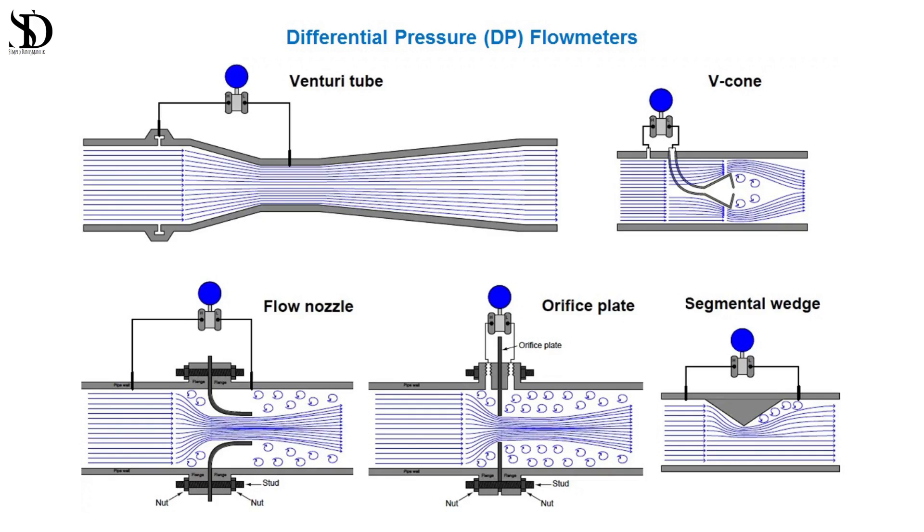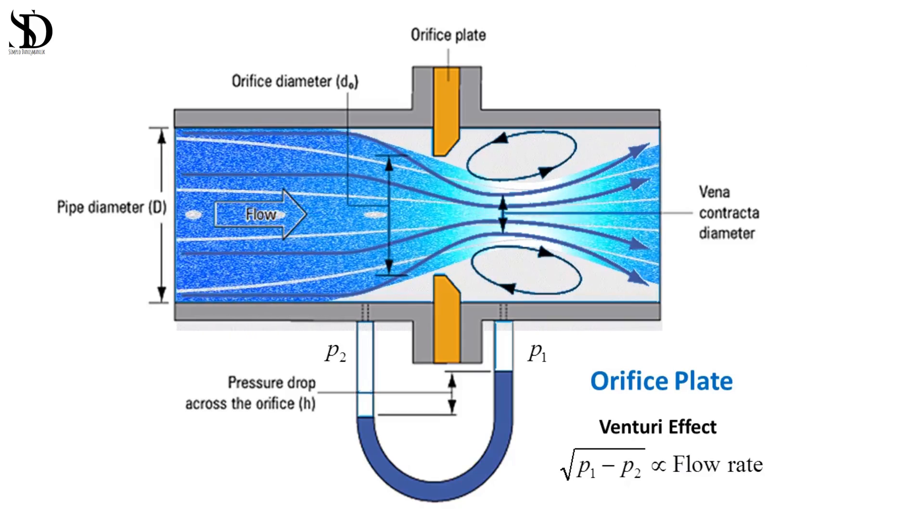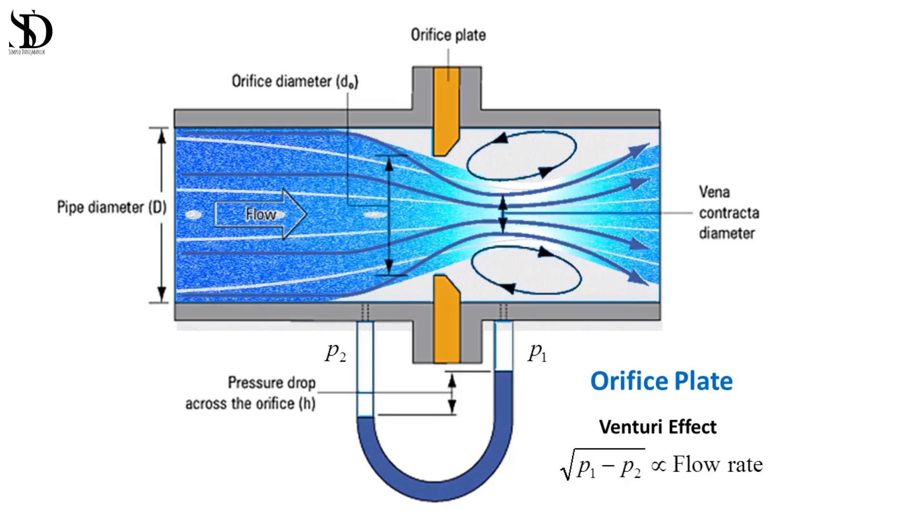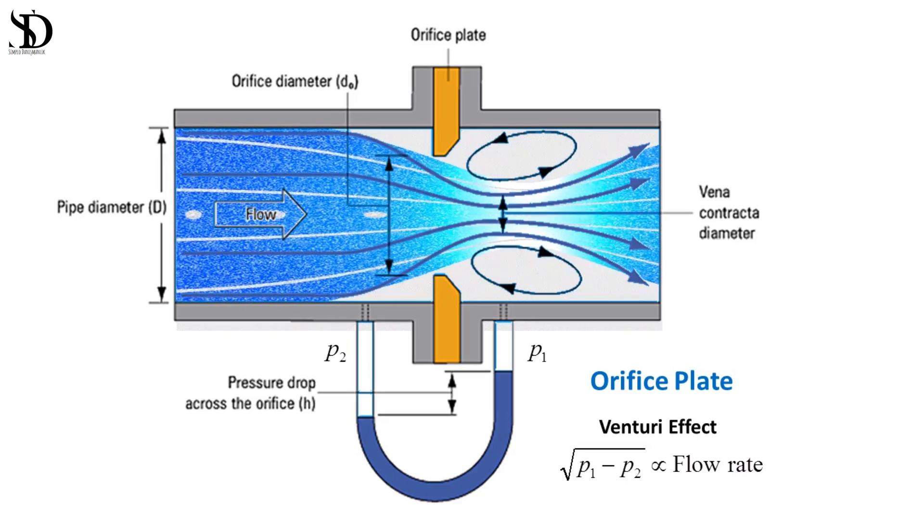Among the commonly used DP flow meters are orifice plates, venturi tubes, and flow nozzles, each offering unique characteristics suited for specific applications. Orifice plates principle: An orifice plate is a simple, cost-effective device consisting of a thin plate with a precisely engineered hole placed in a pipeline.